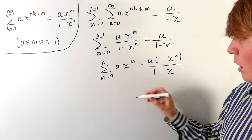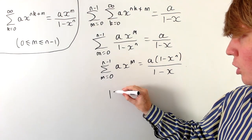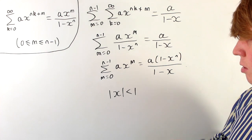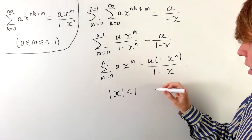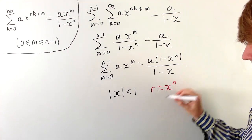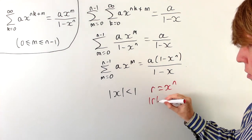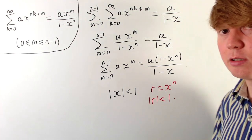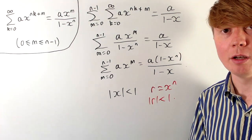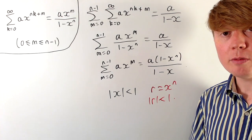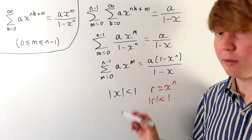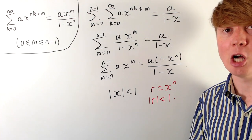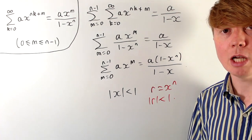This is our familiar partial sum formula, just with different letters. It is valid under the condition that the modulus of r is less than 1 — here r equals x to the n, so the modulus of r being less than 1 means the modulus of x is also less than 1. Having proved the result in this case, we now look at extending it to values of x, or r, which are greater than 1.